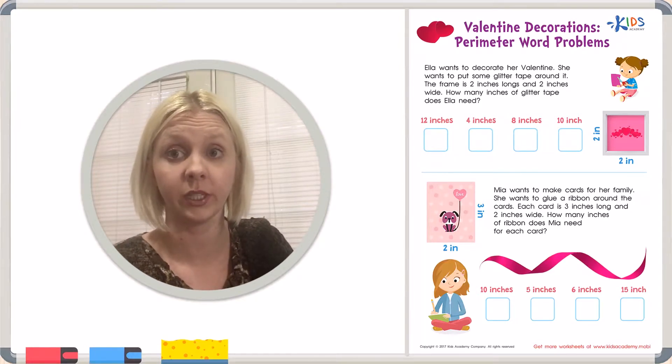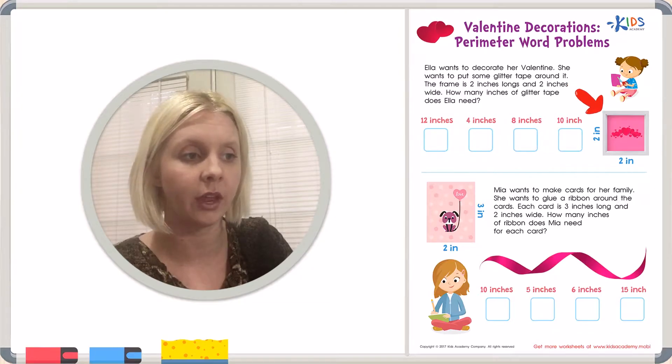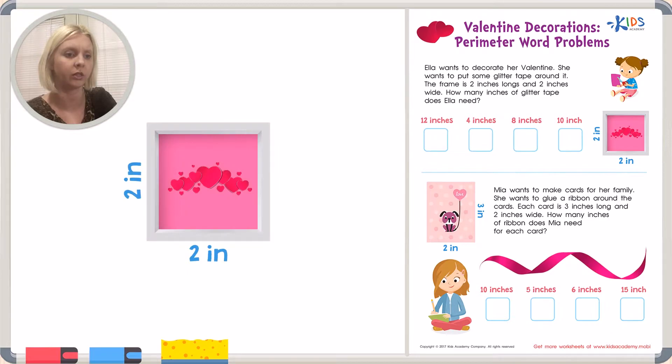So we can tell that this is going to be a problem that requires perimeter. They have already shown us the picture here. We can see there's 2 inches here and 2 inches here. We need to know the perimeter, which means how much glitter tape does she need to go all the way around. Now we can see because it's 2 inches by 2 inches that it's a square. So that lets us know that all of these sides are going to be the same. I'm going to just write on this worksheet that each one of these sides are 2 inches.